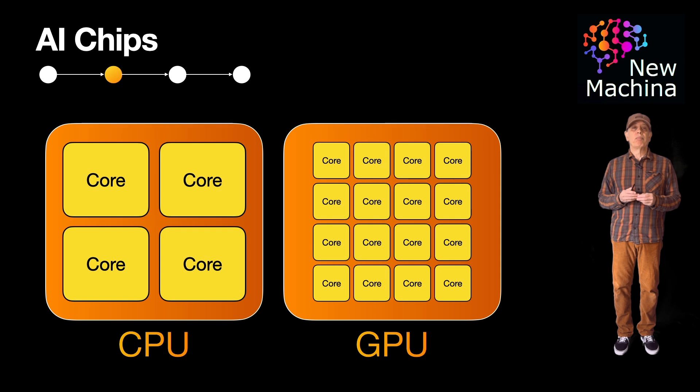So what about TPUs? Well, Google's Tensor Processing Units, or TPUs for short, like GPUs, are far faster for AI tasks, but also lack the general purpose flexibility of a CPU.